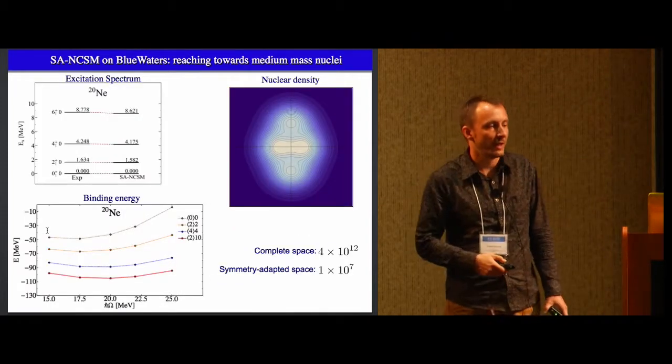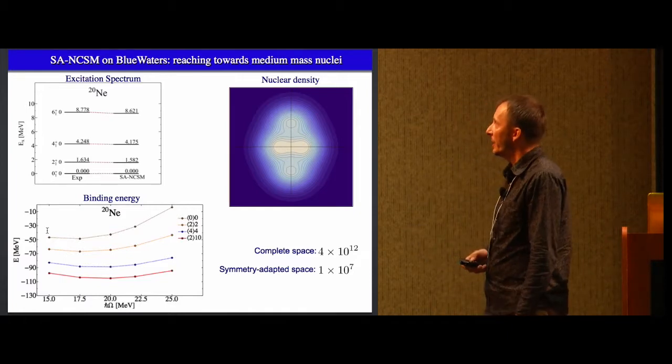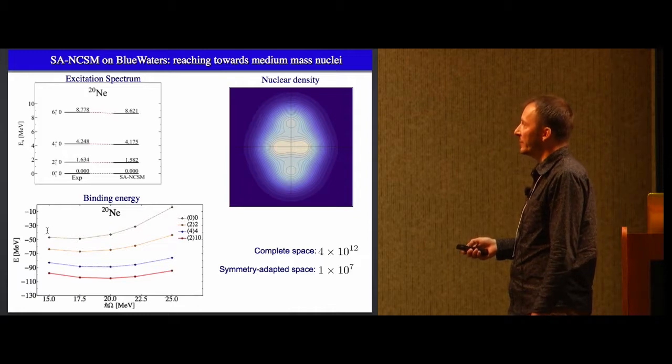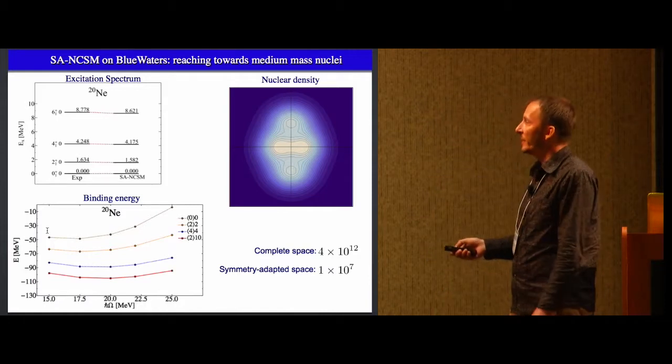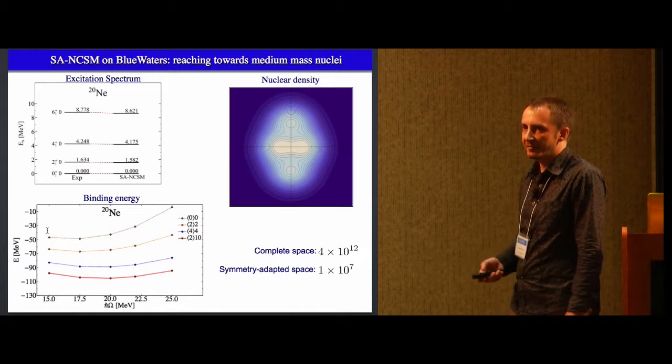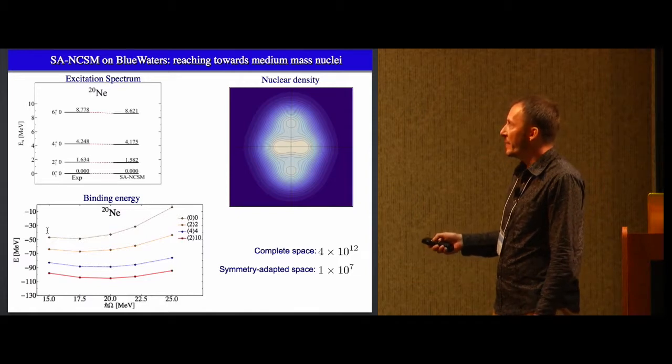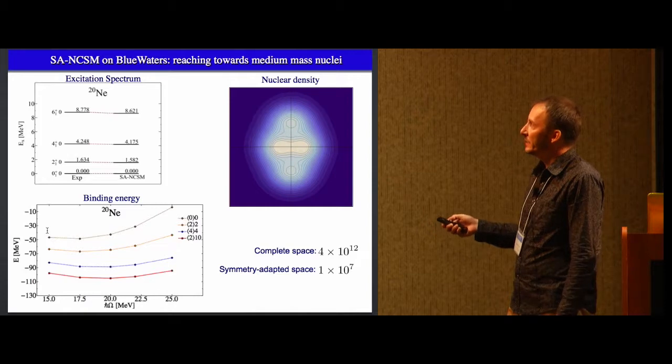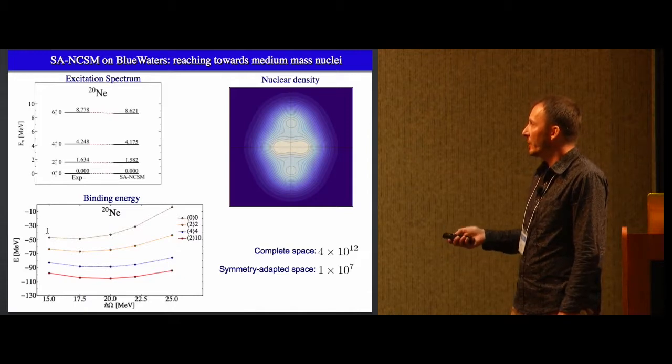And this allows us to go to heavier nuclei, which are unreachable by other ab initio approaches. So this picture shows calculation of NEON-20, which is heavier nuclei. The complete model space is 4 to 10 to 12. That would be 400 or 4,000 trillions. However, we are able to take symmetry adapted model space that describes the physics using only tens of millions of basis states. And we got a pretty good agreement with experiment. Then you can take wave function and look as a microscope. What is the distribution of matter inside of nuclei? And you can see that NEON-20 is not a sphere. It's a deformed nuclei already in its ground state. And binding energies are converging.